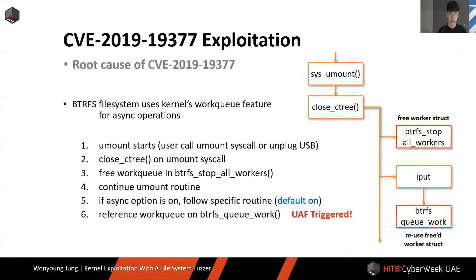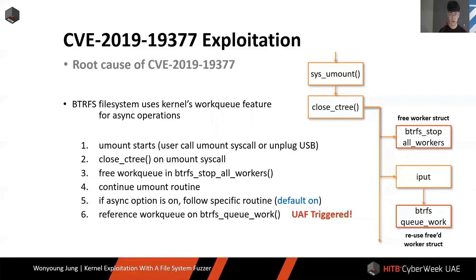Let's see the root cause of the vulnerability. The BTRFS file system uses the kernel work queue feature for async operations. On a user call — mount command or unplug USB — the remount syscall starts and calls the close_ctree function, which frees the work queue in the btrfs_stop_all_workers function. Then continuing the close_ctree routine, in the output function, it checks if the async option is on, and finally calls the btrfs_queue_work function and reuses the freed work queue structure.